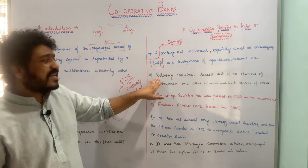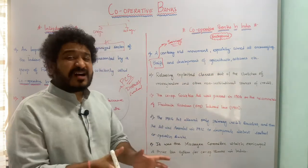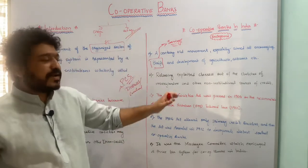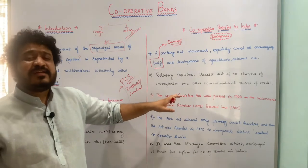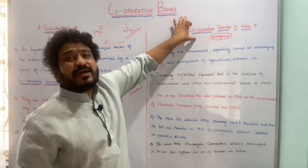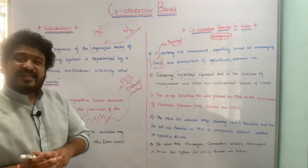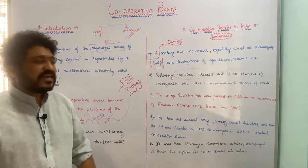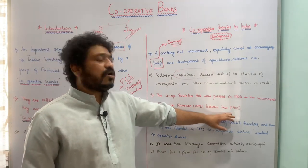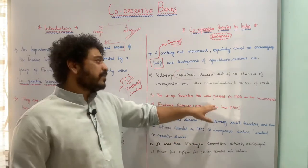Furthermore, after realizing there was exploitation of certain classes — workers, individuals, agriculturalists, artisans, and entrepreneurs — by non-institutional credit sources such as money lenders, merchant bankers, and traders, the idea of cooperative banking was discussed to overcome this exploitation. Thereafter in 1904, the Cooperative Societies Act was passed on the recommendation of Frederick Nicholson in 1899 and Edward Law in 1901.